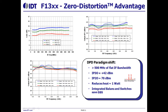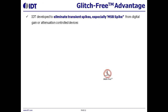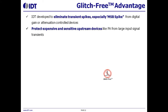The IDT-F30 series has a 1 dB gain ripple from 20 to 500 MHz IF, 42 dBm IP3 and 75 dBm IP2 ultralinear performance over 1.4 to 2.8 GHz, while consuming only 1.3 watts. Glitch-free technology eliminates transition spikes — especially so-called MSB spikes — for digital gain and attenuation control devices, which is a significant advantage to protect expensive sensitive devices like PA and ADC.